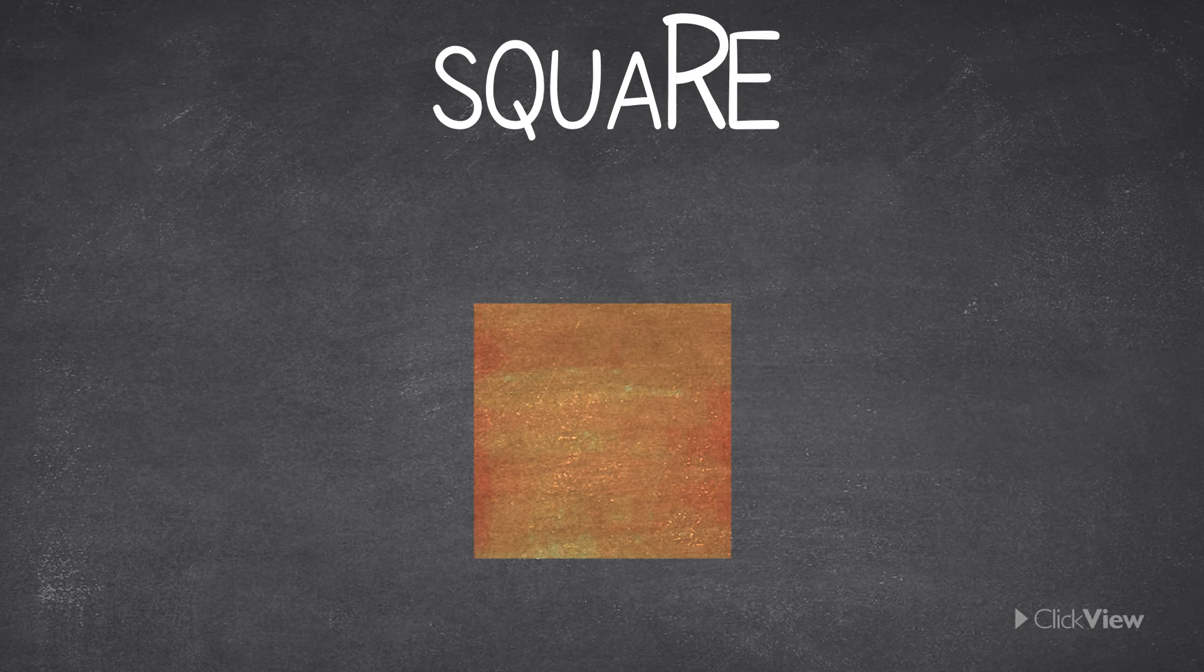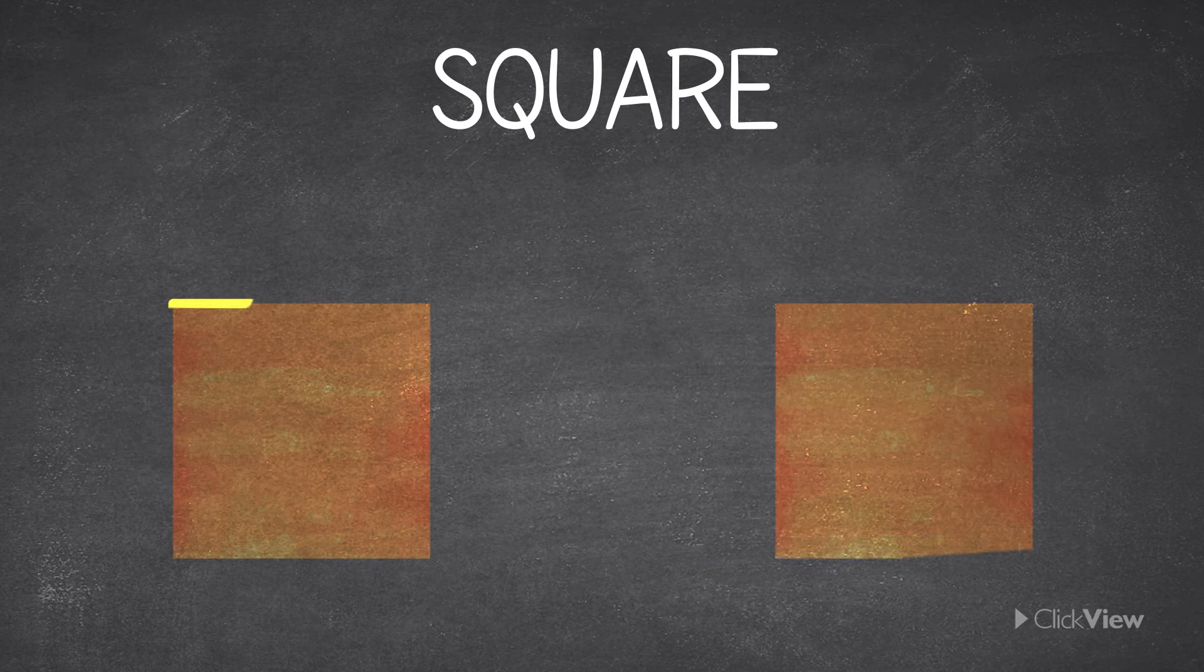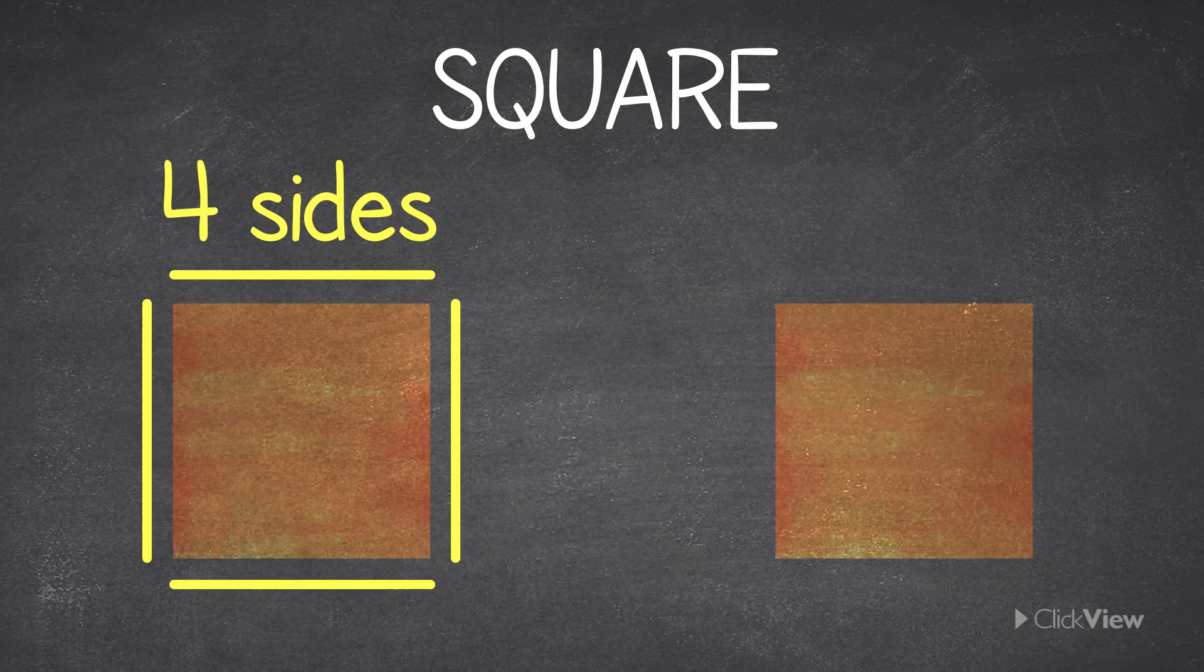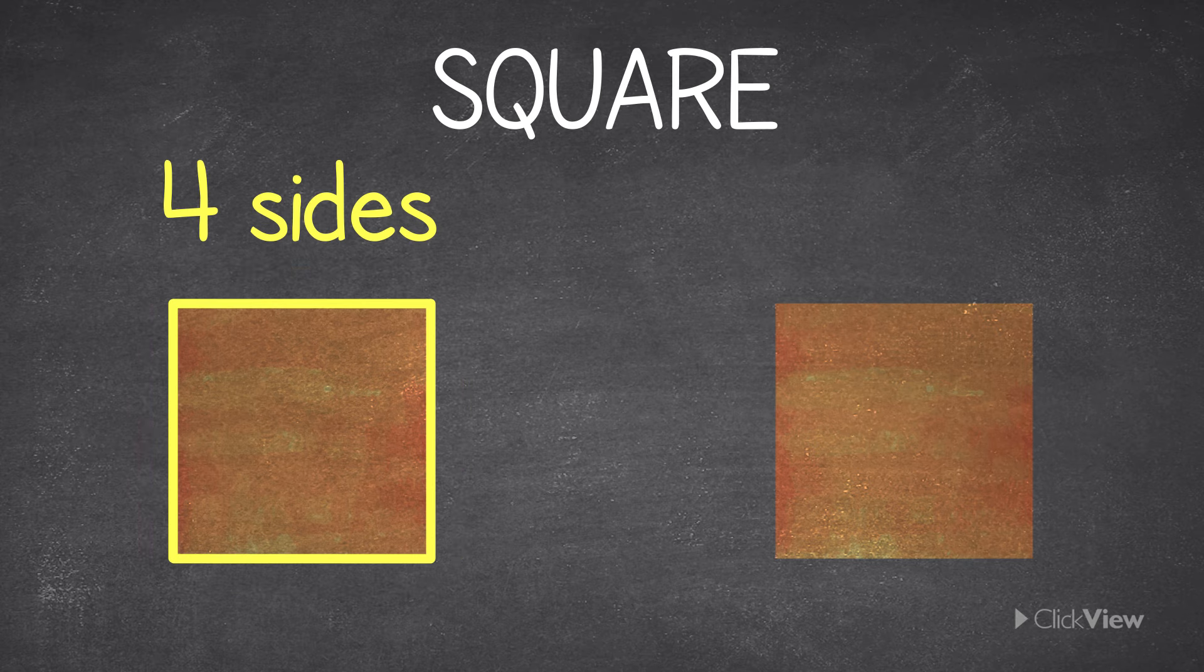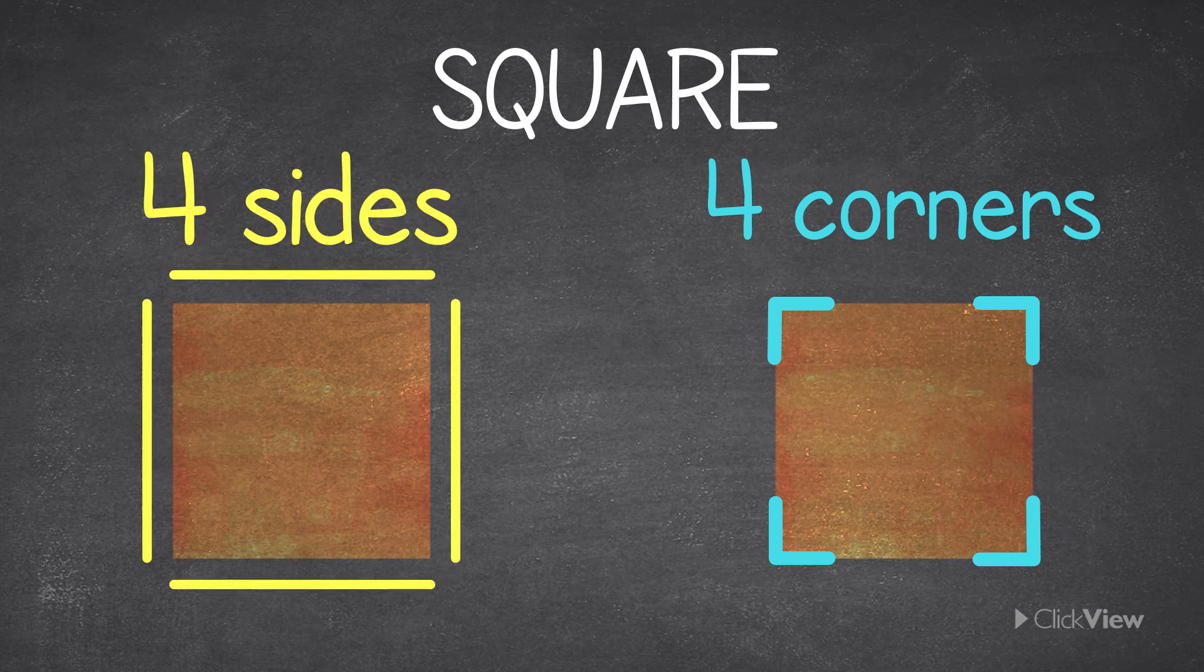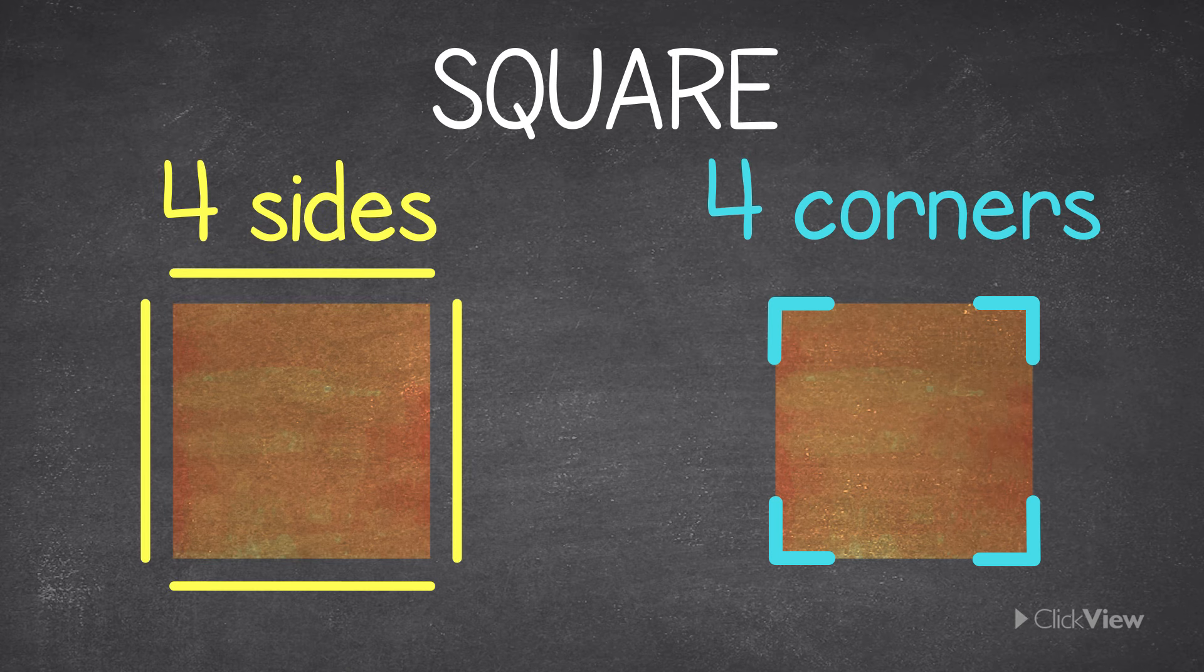This is a square. Here are its four sides and its four corners. Each side of a square is the same length as the other sides. The square also has sides that are parallel.